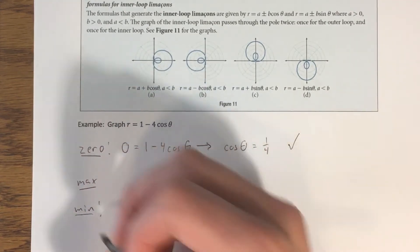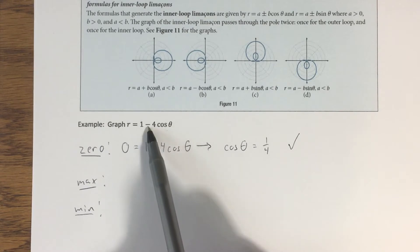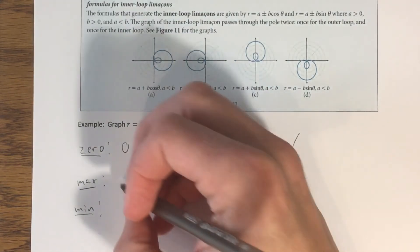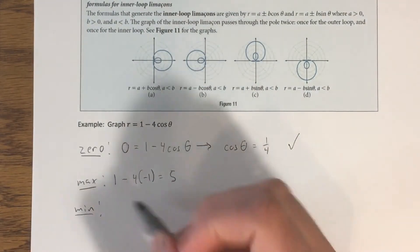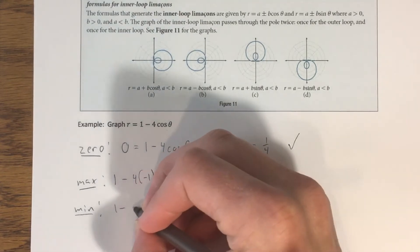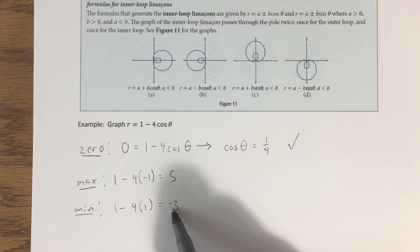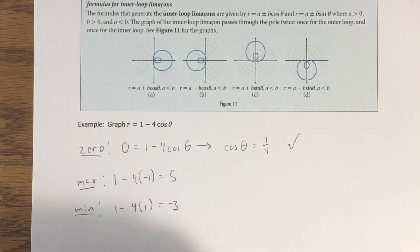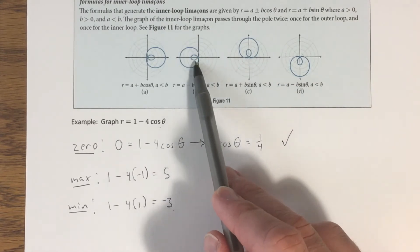For max and min, I plug in ±1 for cosine. Since there's a minus, making cosine = -1 gives 1 - 4(-1) = 5, the maximum. Making cosine = 1 gives 1 - 4(1) = -3, the minimum. Remember: in polar coordinates, r = -3 just means a point 3 units from the pole that's been reflected 180 degrees — still 3 units from the pole.